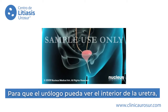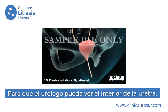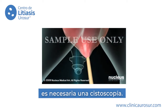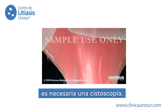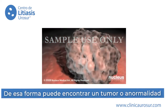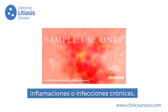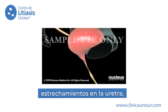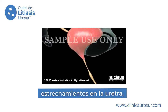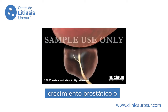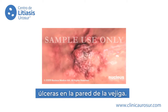By allowing your doctor to view the interior of the urethra, bladder, and the openings of the ureters, a cystoscopy may reveal the following conditions: an unusual growth such as a polyp, cyst, or tumor; a stone in or near the bladder; chronic inflammation or infection; a stricture or narrowing of the urethra; enlargement of the prostate gland; or ulcers in the bladder wall.